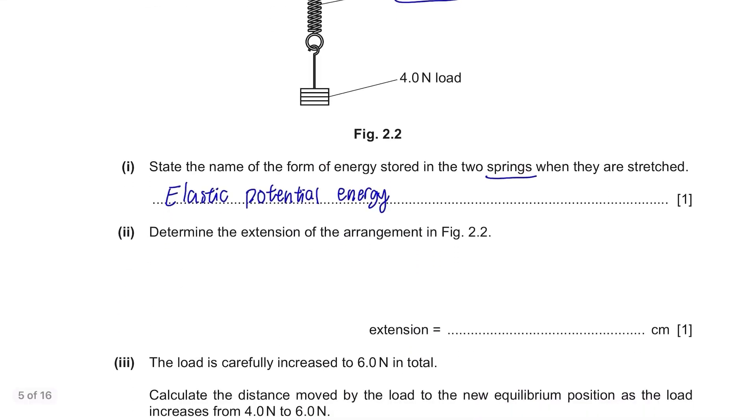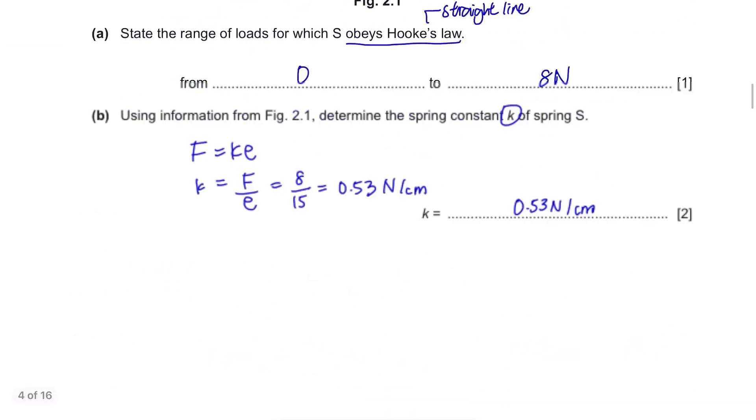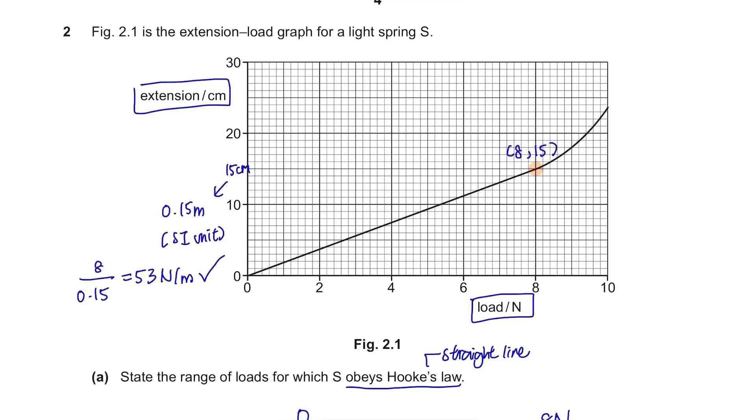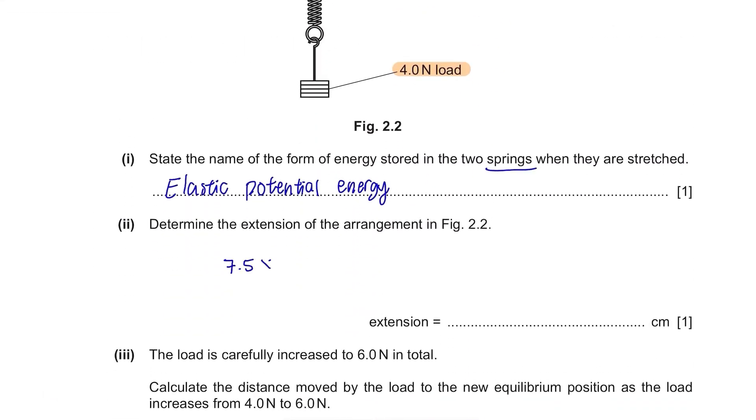Determine the extension of the arrangement in Figure 2.2. The load is 4 N and if we go back to the graph, 4 N gives you extension of 7.5 cm. But there are two springs so we multiply 7.5 with 2 and the answer is 15 cm.